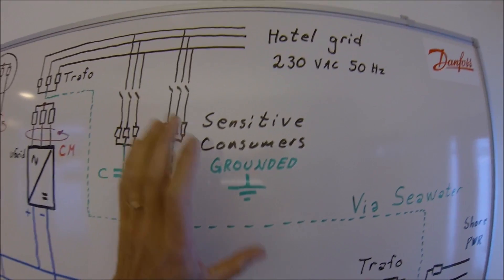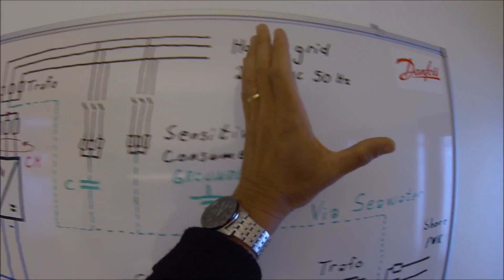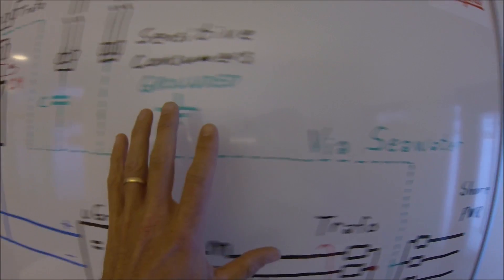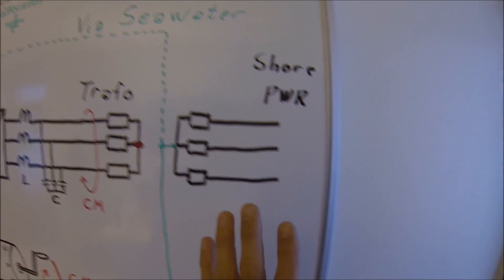Which means that your sensitive consumers should have an isolated hotel grid where you actually have a grounding system more or less connected to the seawater, to the ground, to the ship steel.